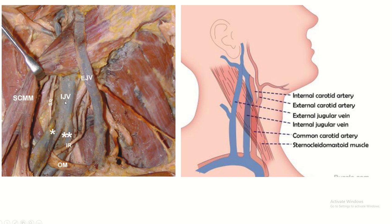The internal jugular vein is present deep to the sternocleidomastoid muscle, and the external jugular vein is situated superficial to the sternocleidomastoid muscle.